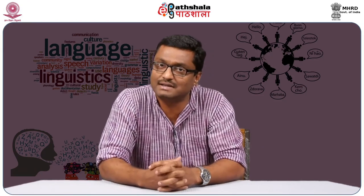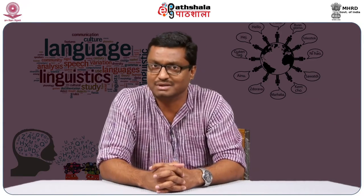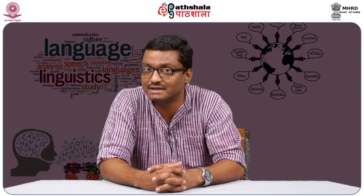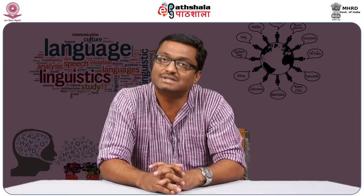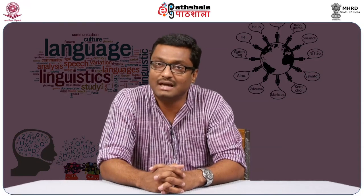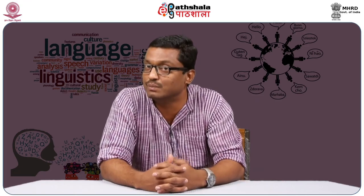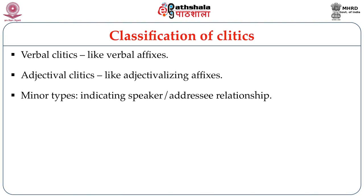For example, in the literature, we find descriptions of verbal clitics. Verbal clitics are like verbal affixes — these are clitics that appear on the verb, bound elements recognized as clitics which take a verb as their host. We also find adjectival clitics, which are like adjectivalizing affixes; the addition of these clitics may derive a word into an adjective. There are also some minor types, like those which indicate speaker, addressee, and relationship in the context of a discourse.